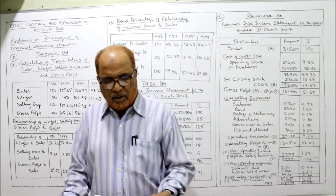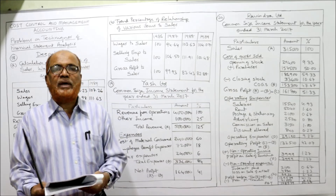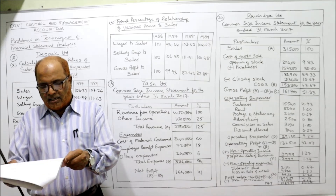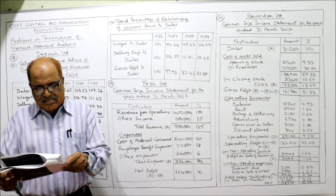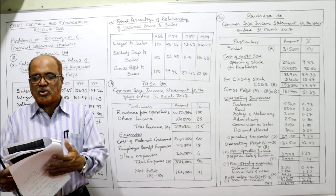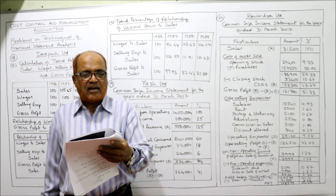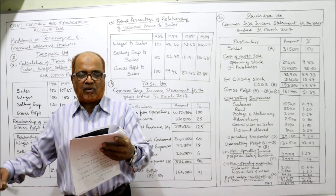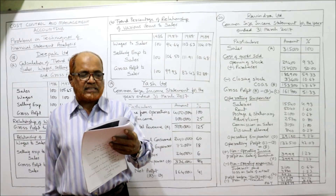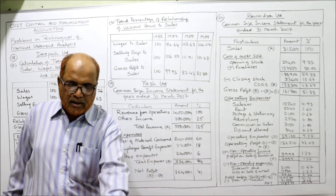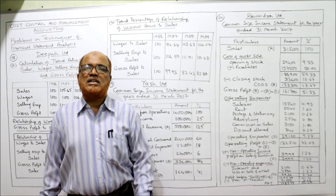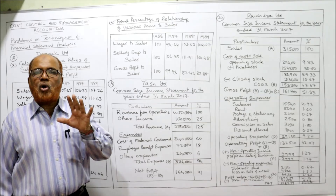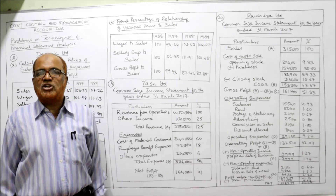Now moving to problem number 20: the following figures are extracted from the books of Ravindra Limited for the year ended 31st March 2017. Items given include sales, purchases, opening stock, closing stock, salaries, rent, postage, advertising, commission, discount, interest paid, loss on sale of asset, profit on sale of investment, and provision for taxation. We are required to prepare a common size income statement, just like the previous problem.